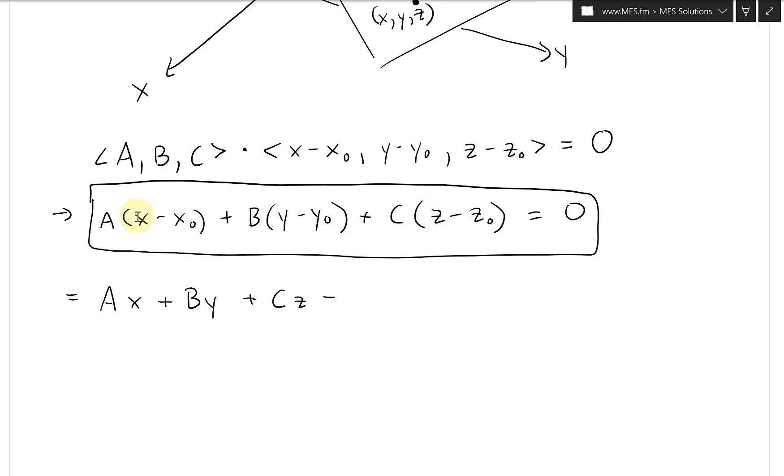B times Y, plus C times Z, and then minus, when you do this all together, and I add those up, we'll get this AX₀, plus then this BY₀, and then C times Z₀. Like that, this equals to zero.